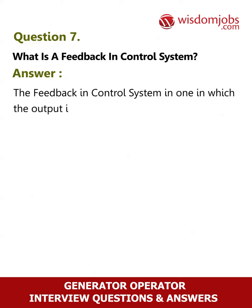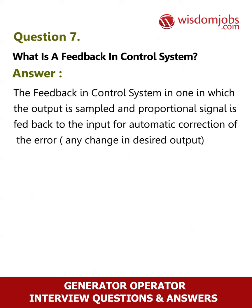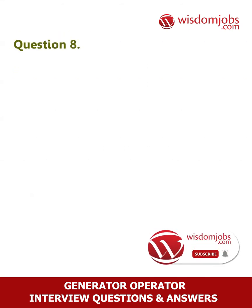Question 7: What is feedback in a control system? Answer: The feedback in a control system is one in which the output is sampled and a proportional signal is fed back to the input for automatic correction of the error and any change in desired output for further processing to get back the desired output.